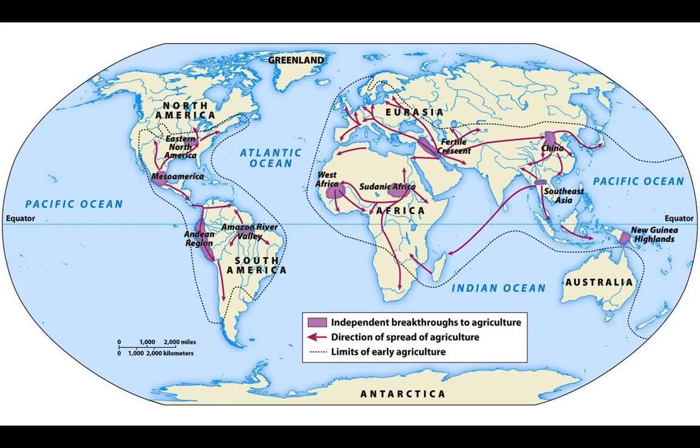About 10,000 years ago on planet Earth, one of the many things that happened was the end of the Old Ice Age. What was happening on planet Earth was a global warming - warming temperatures and melting glaciers. This transformation in the Earth's climate in many places led to a change in the kinds of plants and animals that were available to the hunter-foragers.